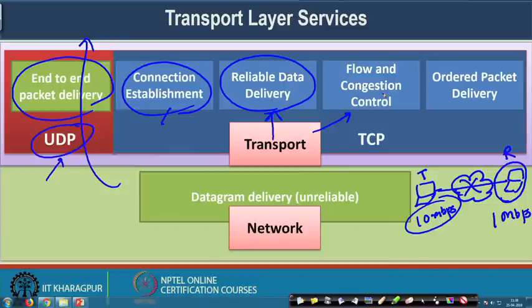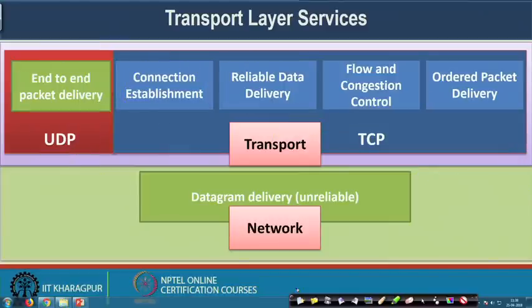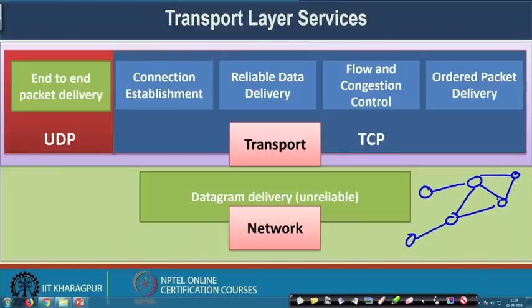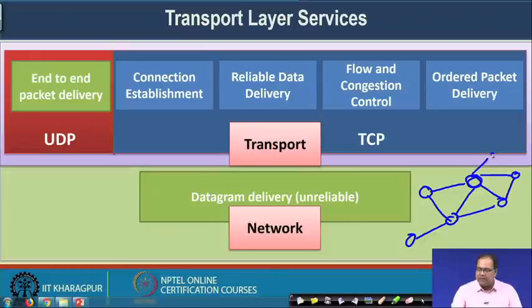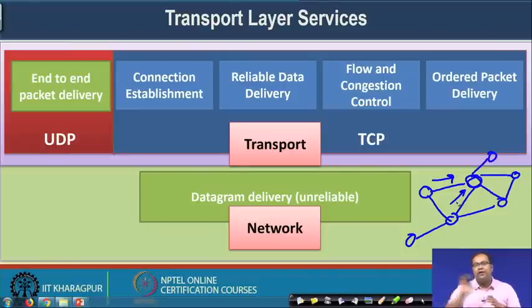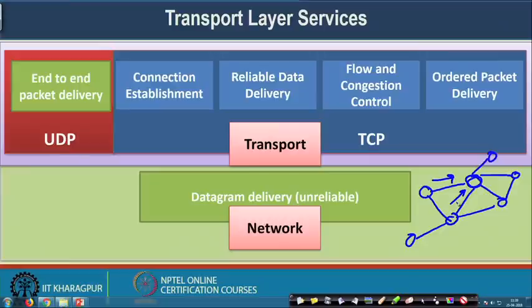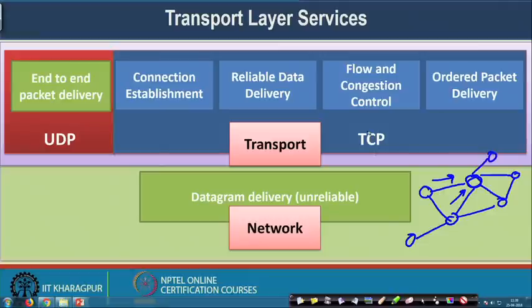Congestion control is another service. Whenever you are transferring data in the network — if we represent the network as a graph where every network device is a node — an intermediate node receives data from multiple other parts. You can think of the network as analogous to a road traffic network: at a road junction, if traffic is coming from multiple roads it may become congested. Similarly, the transport layer supports congestion control to avoid congestion whenever packets are arriving from multiple different parts of the network.